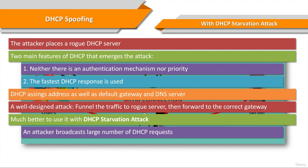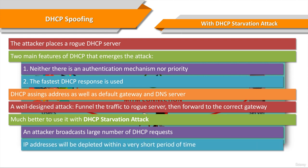In a DHCP starvation attack, an attacker broadcasts a large number of DHCP request messages with spoofed source MAC addresses. If the legitimate DHCP server in the network starts responding to all these bogus DHCP request messages, available IP addresses in the DHCP server scope will be depleted within a very short span of time.